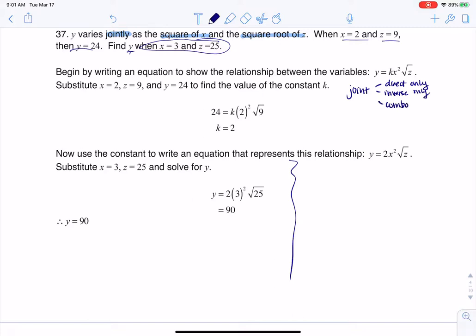The thing is, I see the 'jointly' up here but I don't see anything about an inverse relationship. So I'm going to assume we're just doing direct variation only. I'm going to use multiplication. So I'll have my k times the square of x times the square root of z. That's my general variation equation I'm going to use.